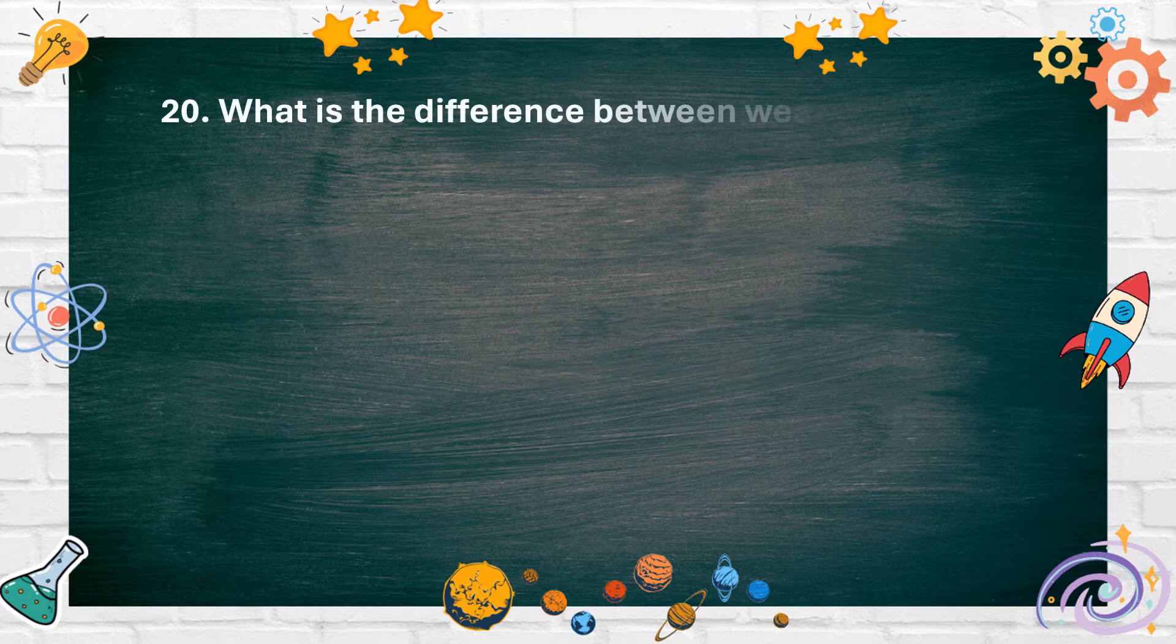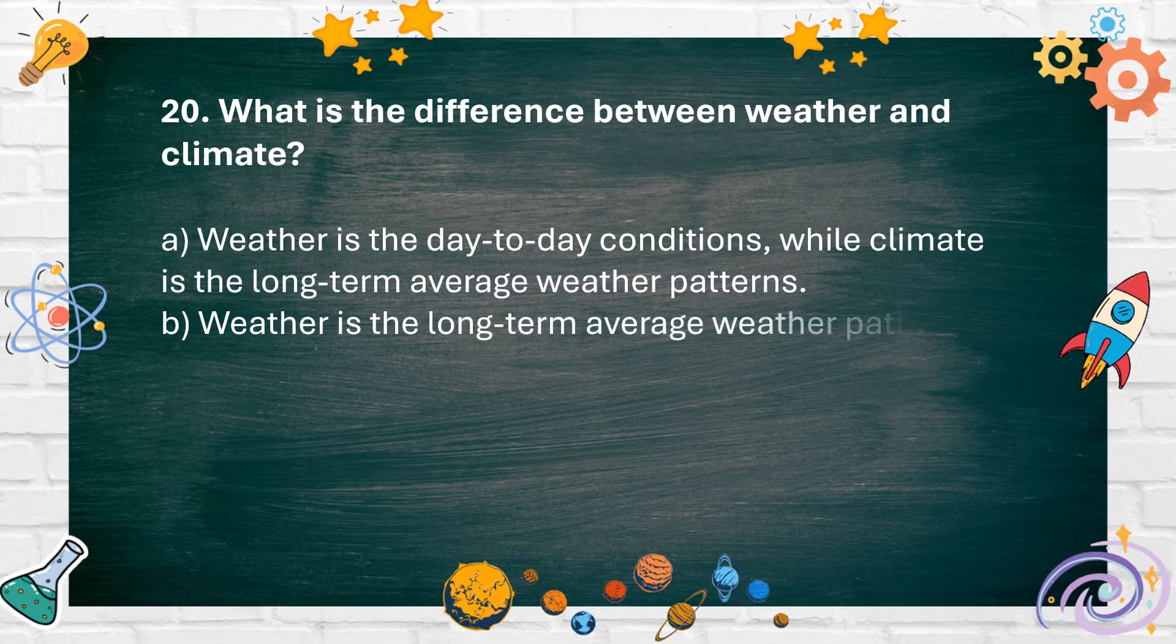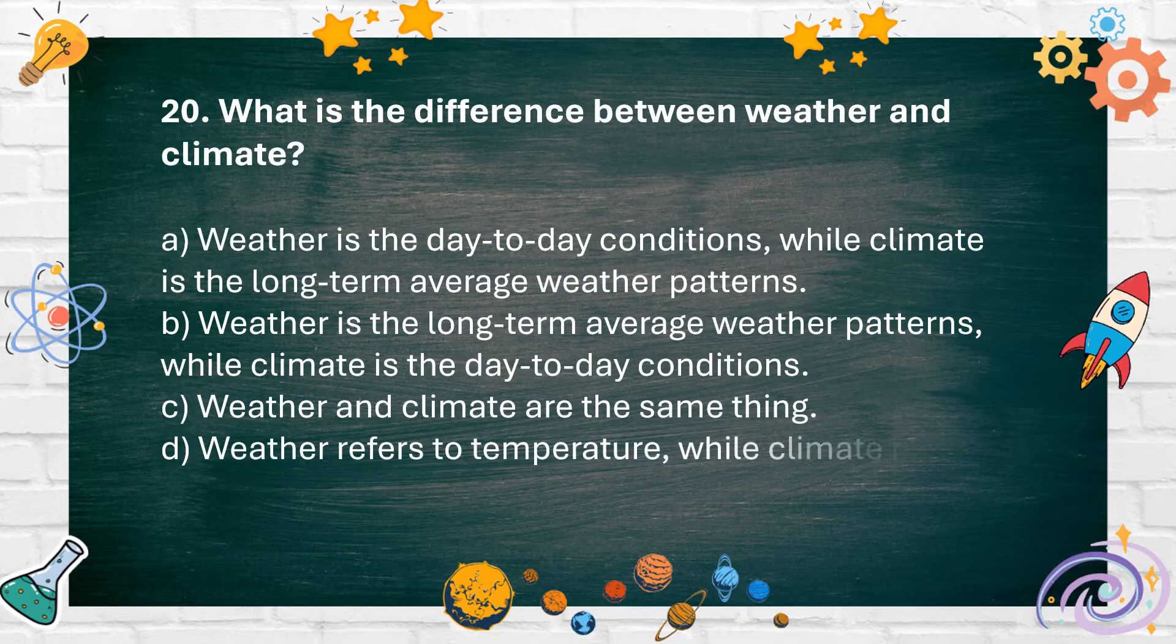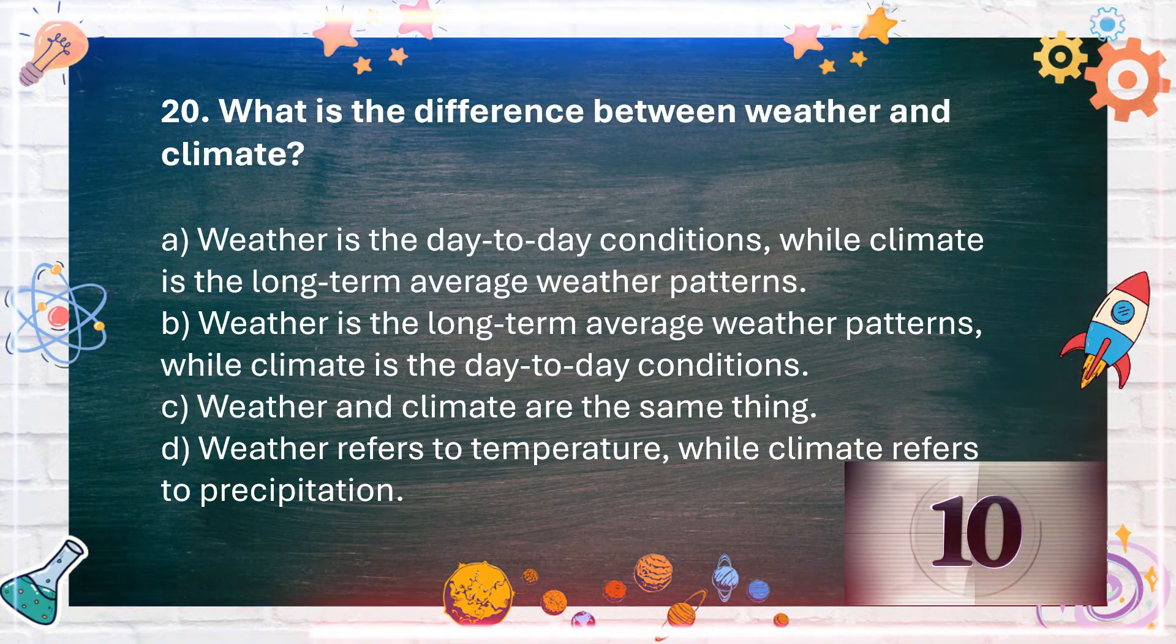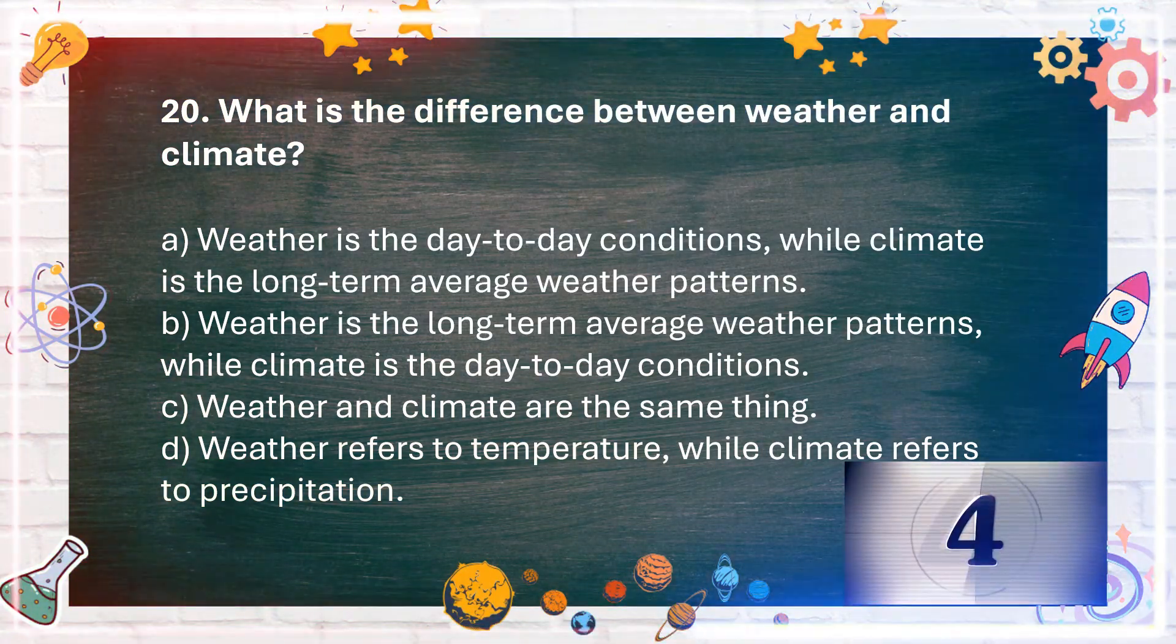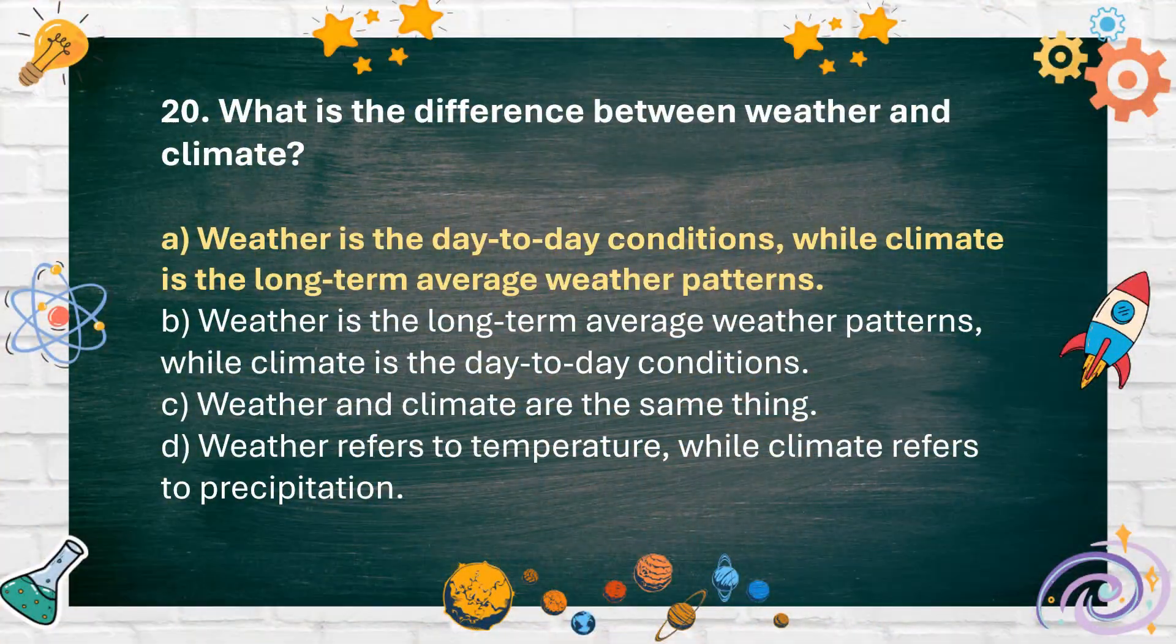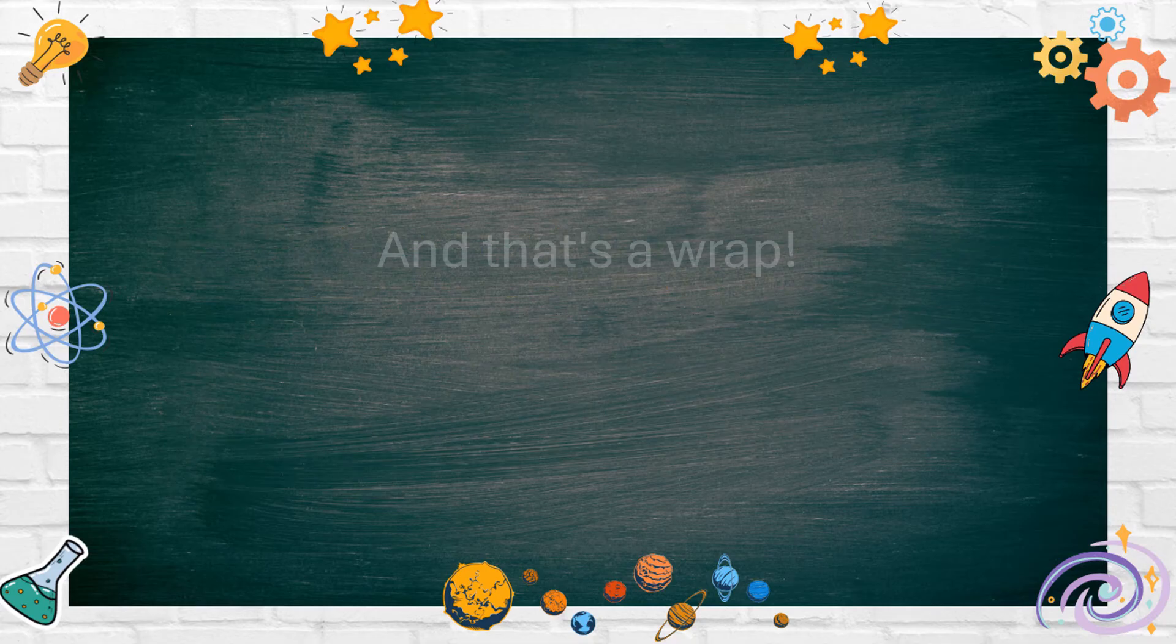Number 20: What is the difference between weather and climate? A. Weather is the day-to-day conditions, while climate is the long-term average weather patterns. B. Weather is the long-term average weather patterns, while climate is the day-to-day conditions. C. Weather and climate are the same thing. D. Weather refers to temperature, while climate refers to precipitation. The answer is A. Weather is the day-to-day conditions, while climate is the long-term average weather patterns.